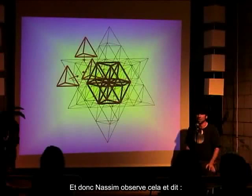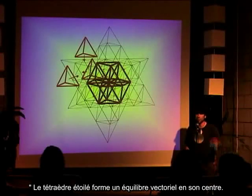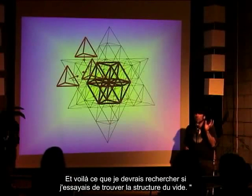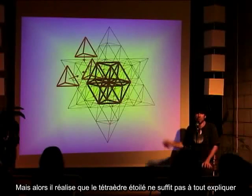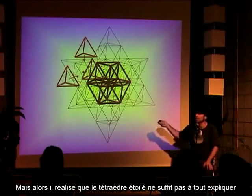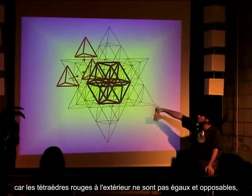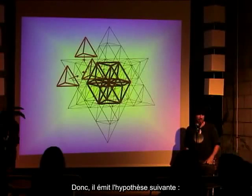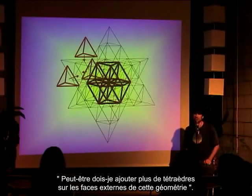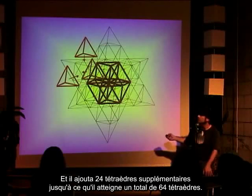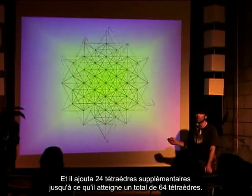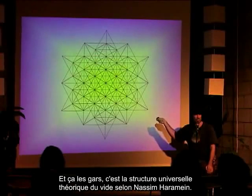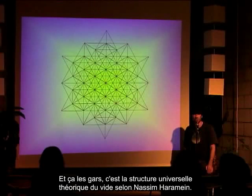Nassim Haramein noticed that the star tetrahedron forms a vector equilibrium in the middle, which would be what he was looking for as the fabric of the vacuum. But he realized this couldn't be it by itself, because the red tetrahedrons on the outside don't have a complete equal and opposite — they're open-faced. So he hypothesized adding more tetrahedrons to the outside, adding 40 more until he reached a total of 64 tetrahedrons. This is Nassim Haramein's theorized fabric of the vacuum of the universe.